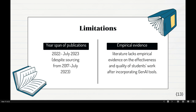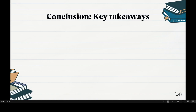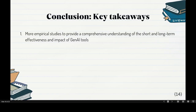There are limitations to my study. The year span of publication: I started sourcing from 2017, the year GPT first came out. But unfortunately it's really only from when ChatGPT came out in November 2022 that papers started appearing. So it's very limited — 2022 to July 2023 — a very short period. That's why a scoping review is appropriate, since it's a very new technology. The literature also has a selected lack of empirical evidence on the effectiveness and quality of students' work after incorporating Gen.AI.